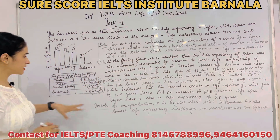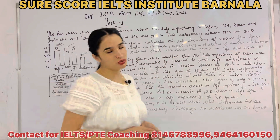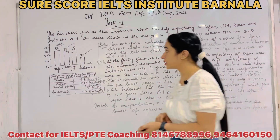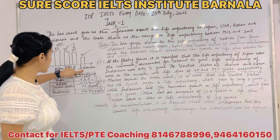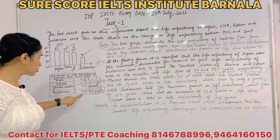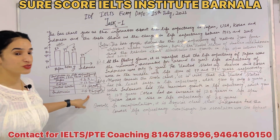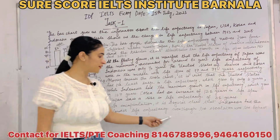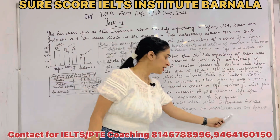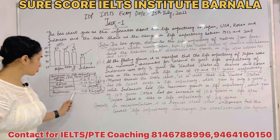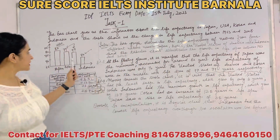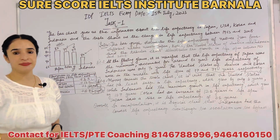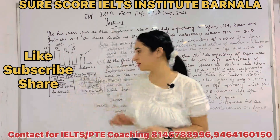In encapsulation, it is crystal clear that Indonesia had the lowest life expectancy, even though the escalation — the growth — was the highest. That is the striking overall point. So three sentences for the bar graph and three for the tabular chart gives us six total sentences. That's all about Task 1.